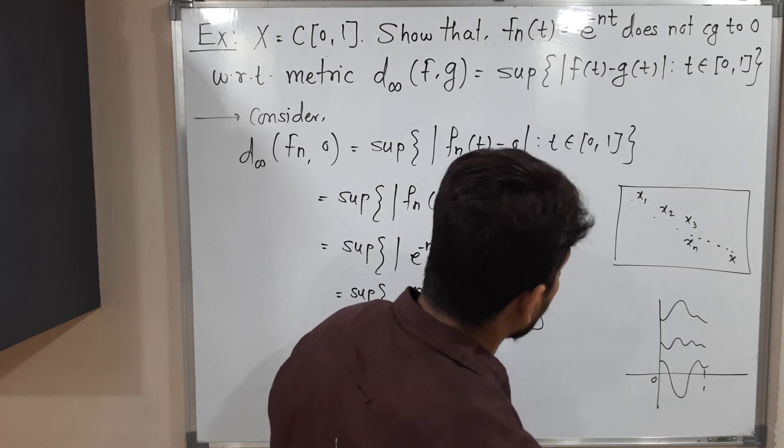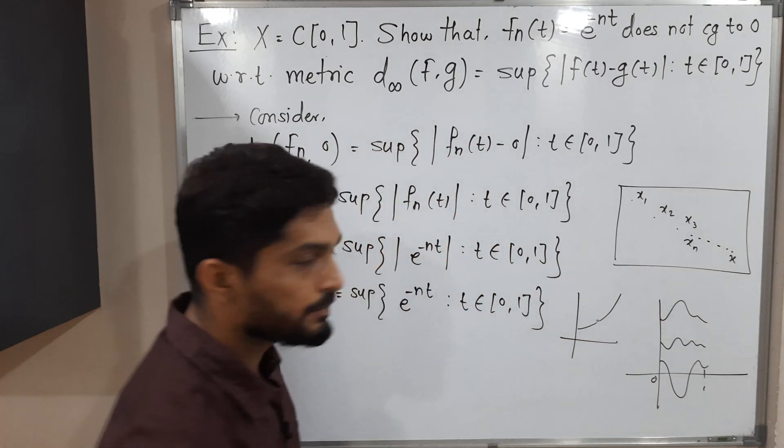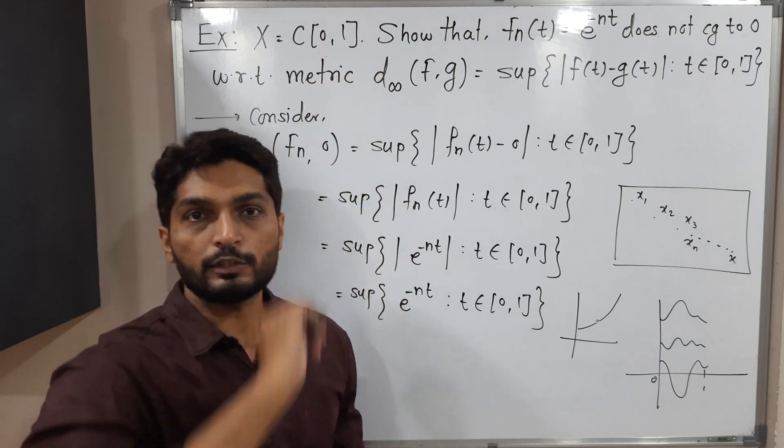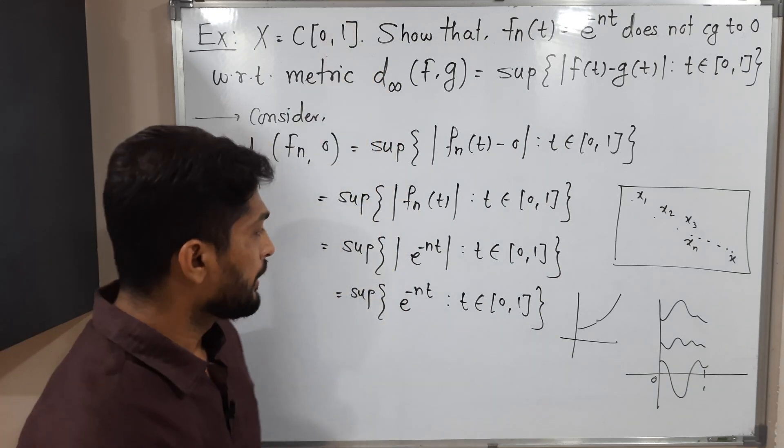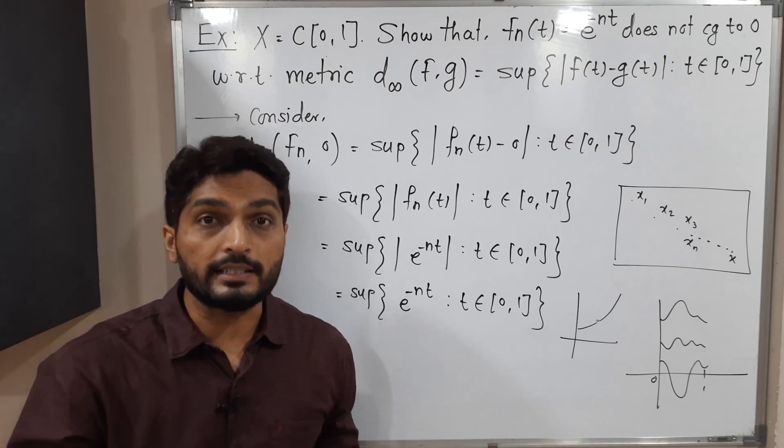The exponential function looks like this. Exponential function is always an increasing function. But here we have e^(-nt), so it will be a decreasing function.